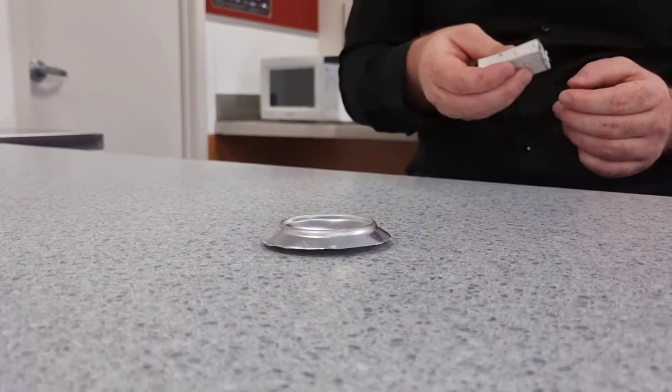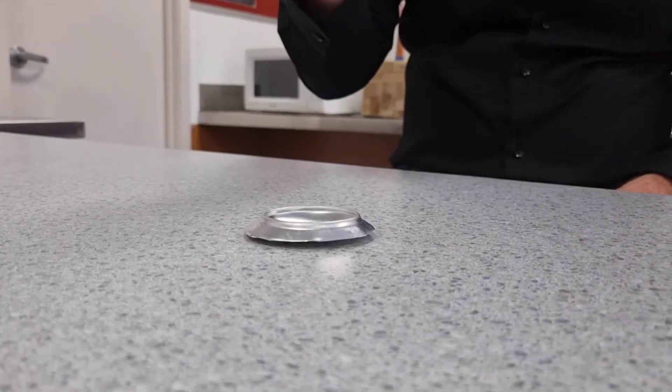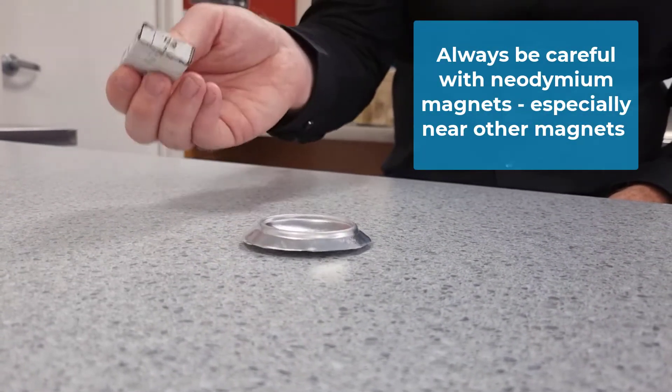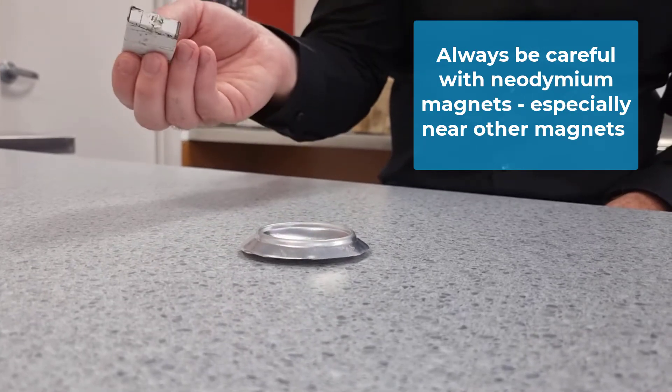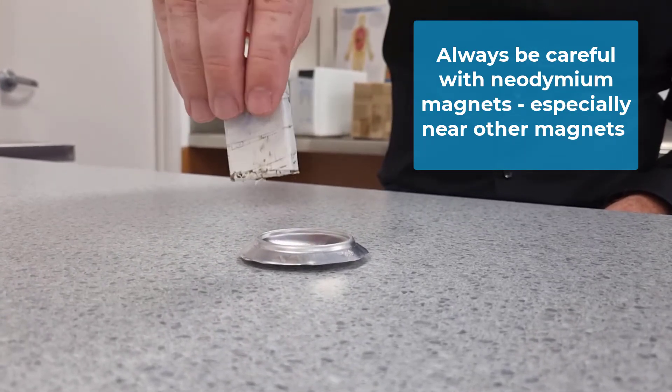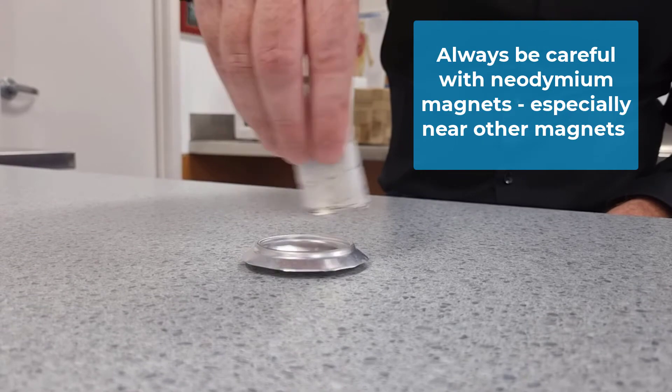Then we can take the neodymium magnet and we can demonstrate that the bottom of the can is not a magnetic metal. And then I would show my students this, just rotating the magnet in a little circular path.